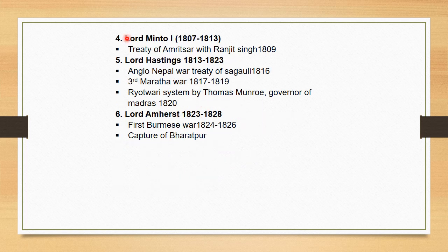Next is Lord Minto. The important event was the Treaty of Amritsar between Ranjit Singh and the British. They signed a treaty dividing areas — Ranjit Singh remained in Punjab, and the British stayed in their territory. The British tried to expand but could not occupy Punjab as long as Ranjit Singh was alive.